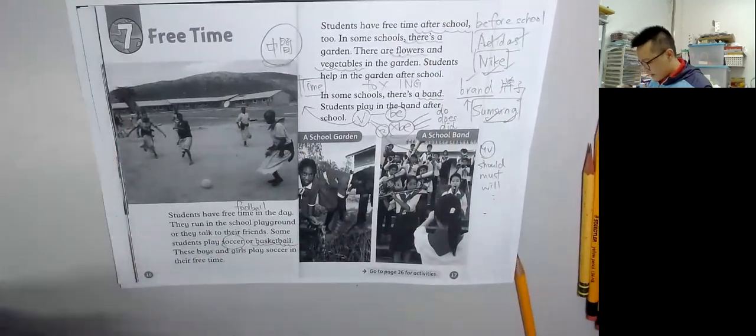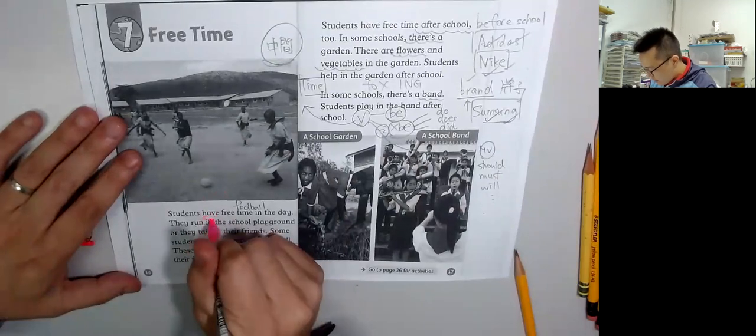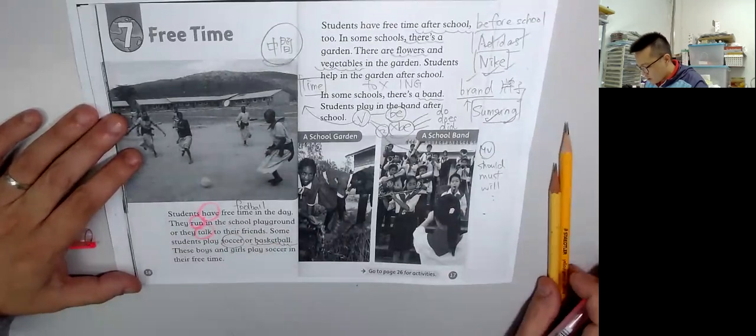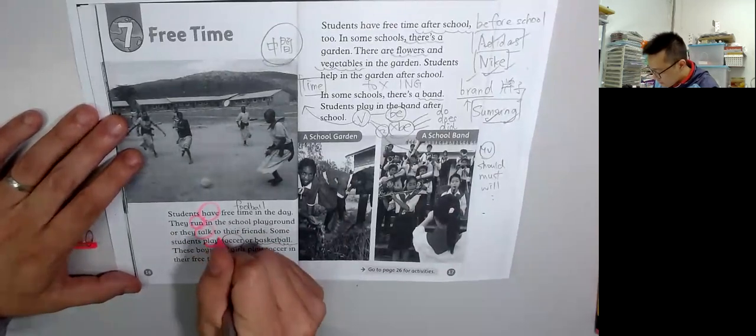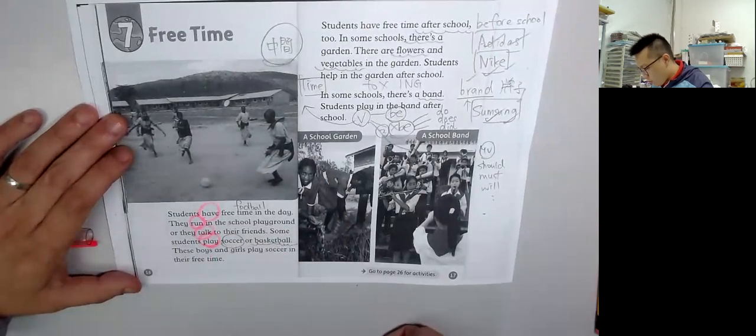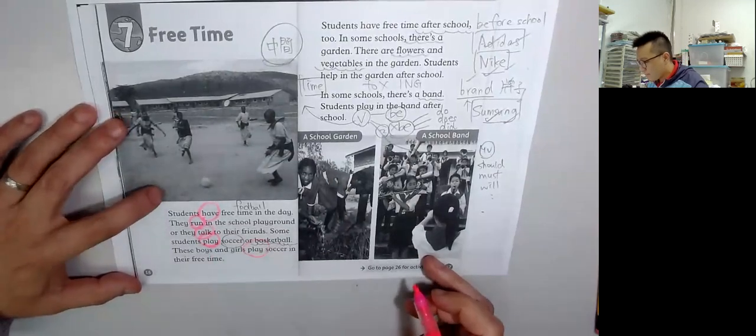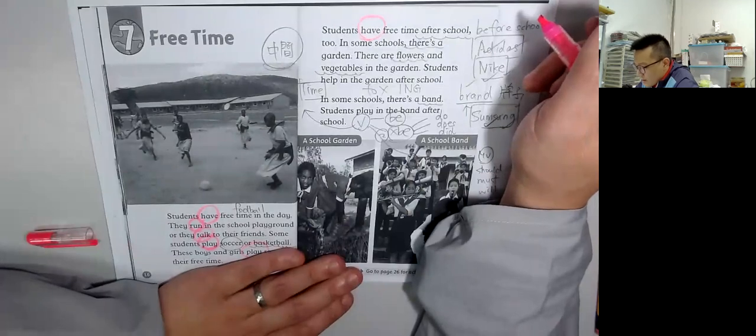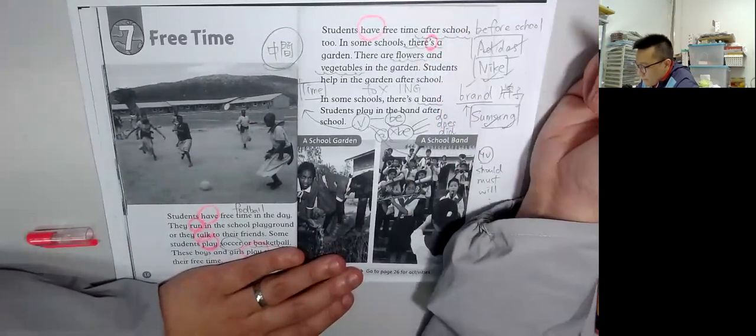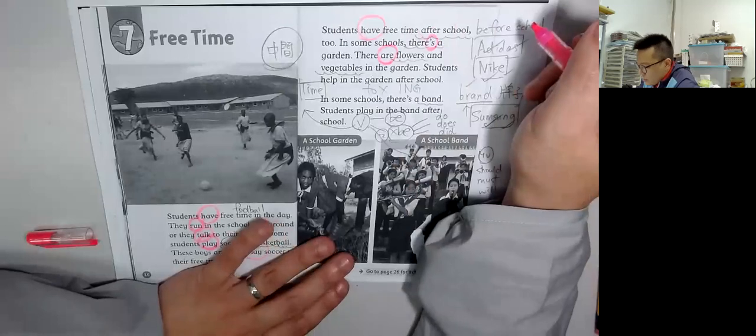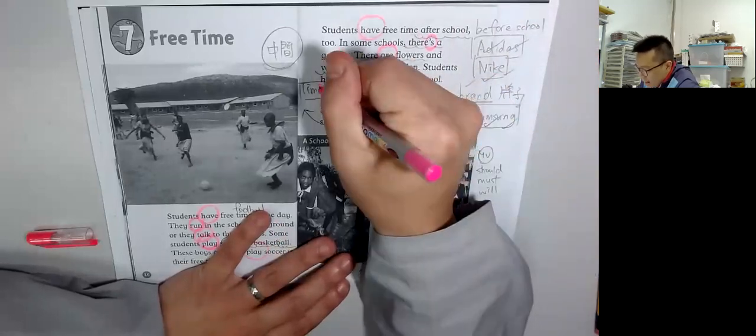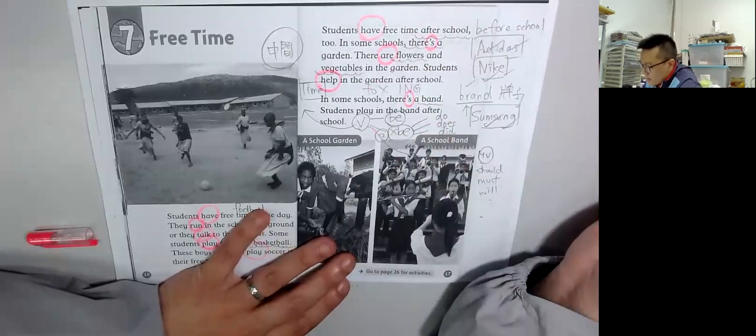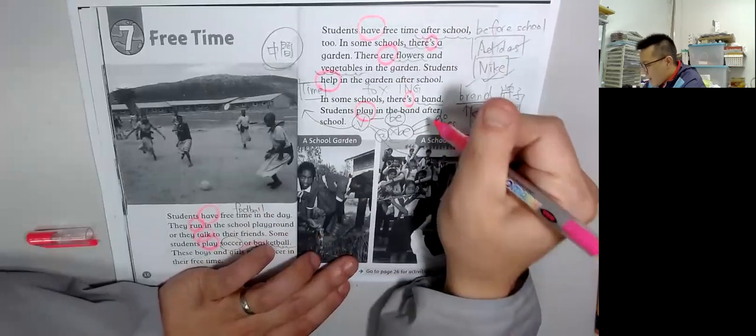Verbs are divided into three categories. Students have free time in the day. They run in the school playground or talk to their friends. Some students play soccer or basketball. These boys and girls play soccer in their free time. Students have free time after school. In some schools there's a garden. There are flowers and vegetables in the garden. Students help in the garden after school. There's a band. Students play in the band after school.